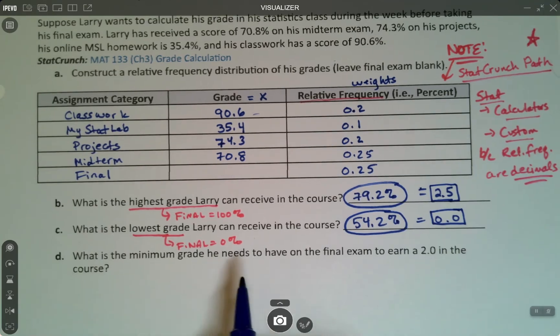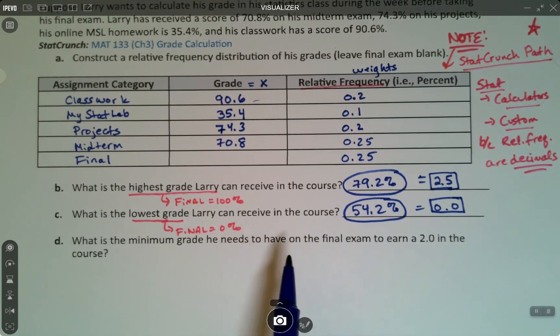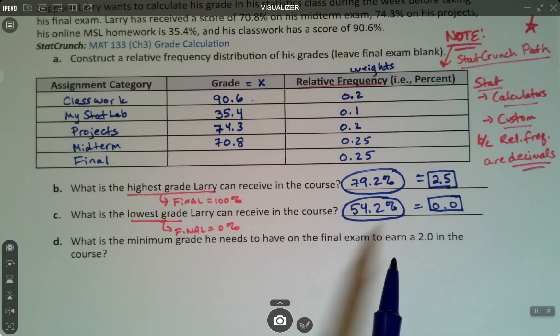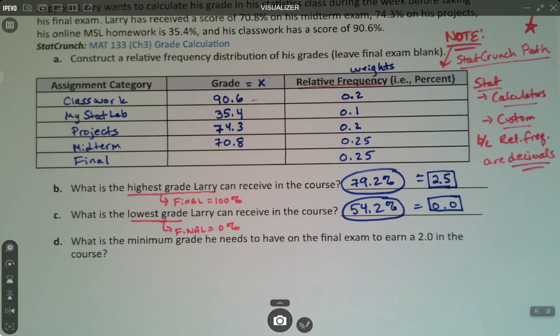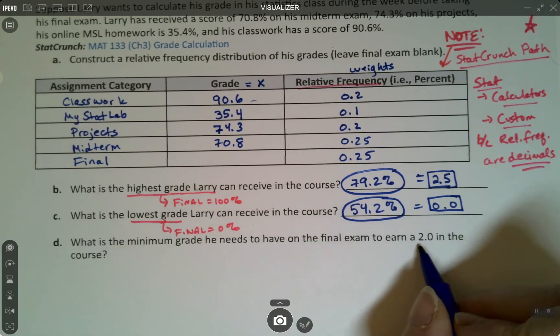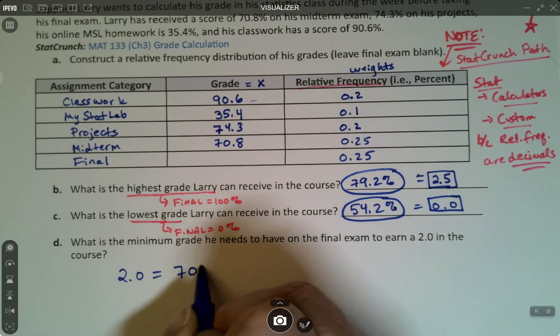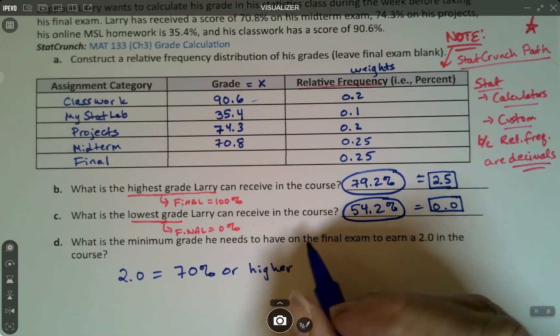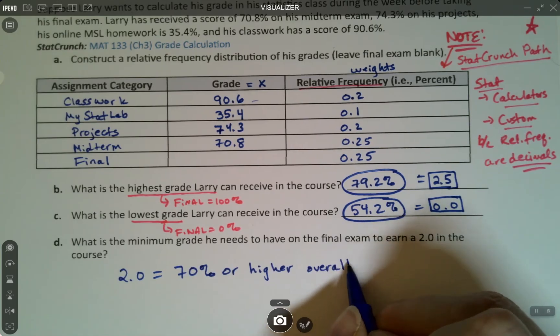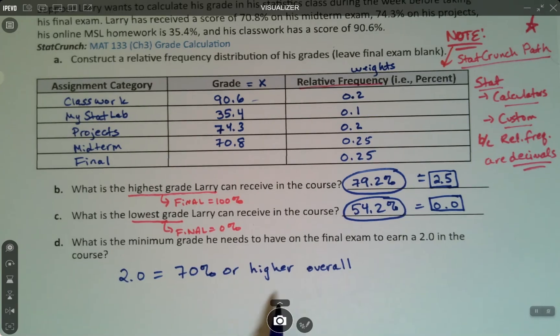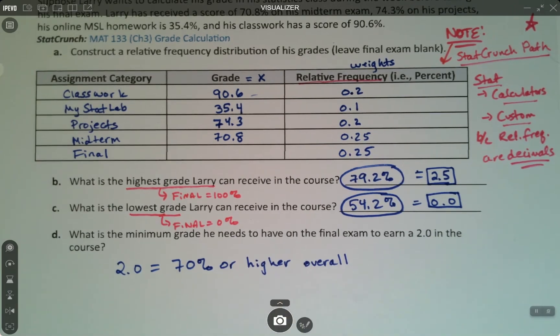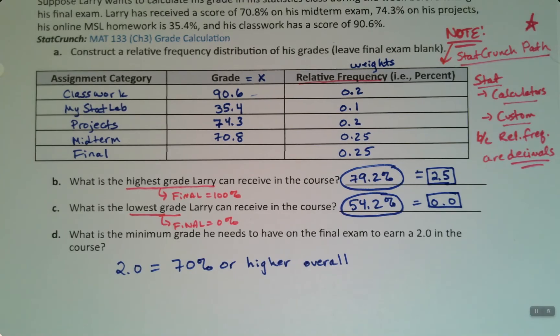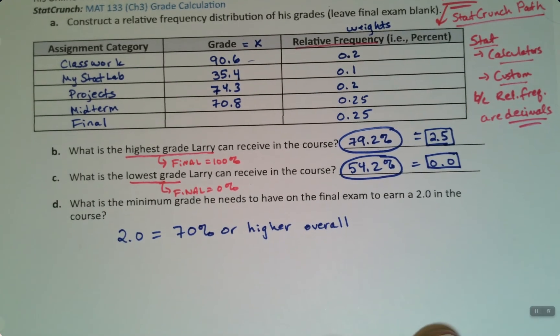Now what's the minimum grade to have on the final, or that he needs to have on the final, to earn a 2.0? This question every instructor gets. What's the minimum I need to pass? So a 2.0 is a 70% or higher. So what we're trying to figure out is how to give Larry a 70% or higher overall grade. Well, honestly, there's an algebra way to do this. It involves an equation with an x in it and all that good stuff.